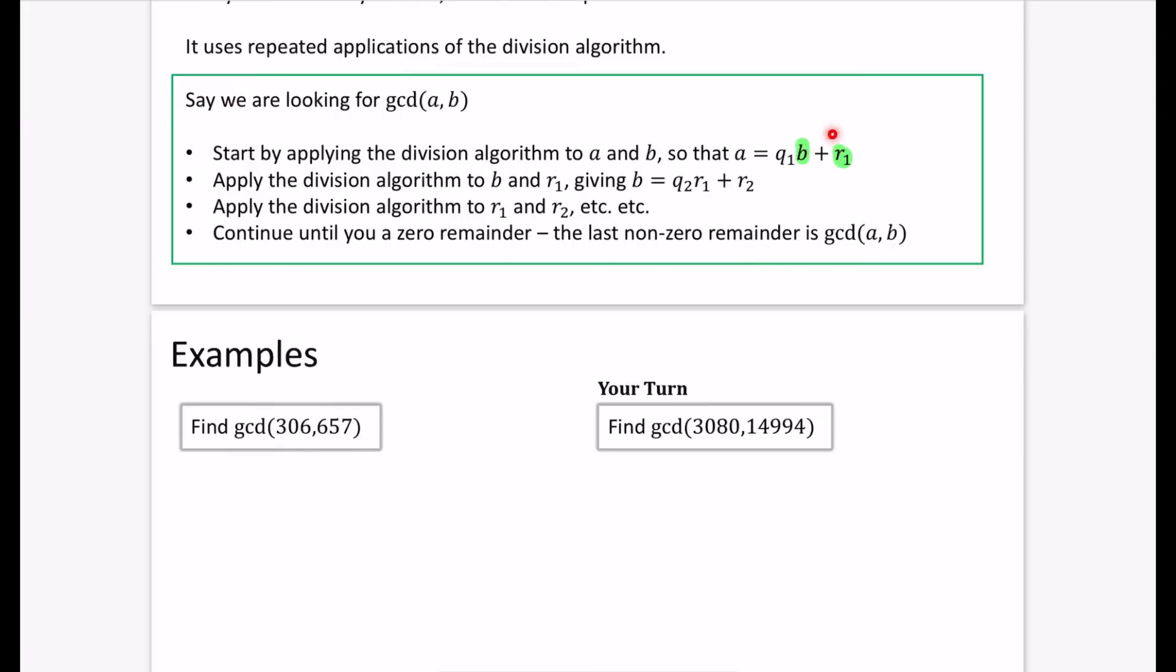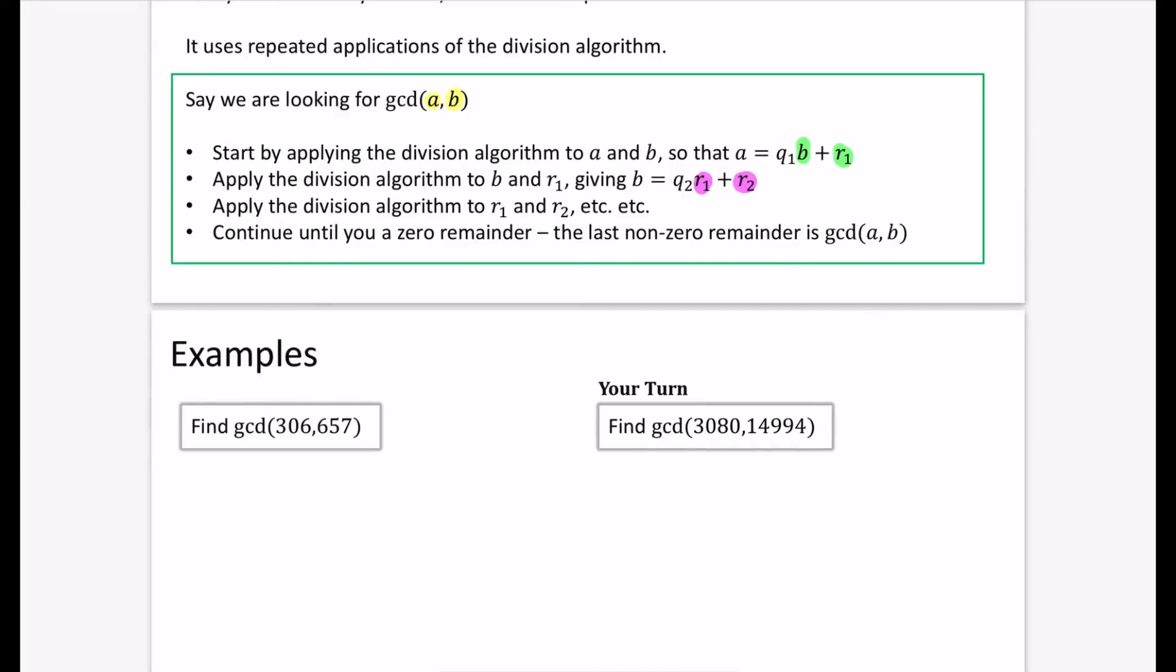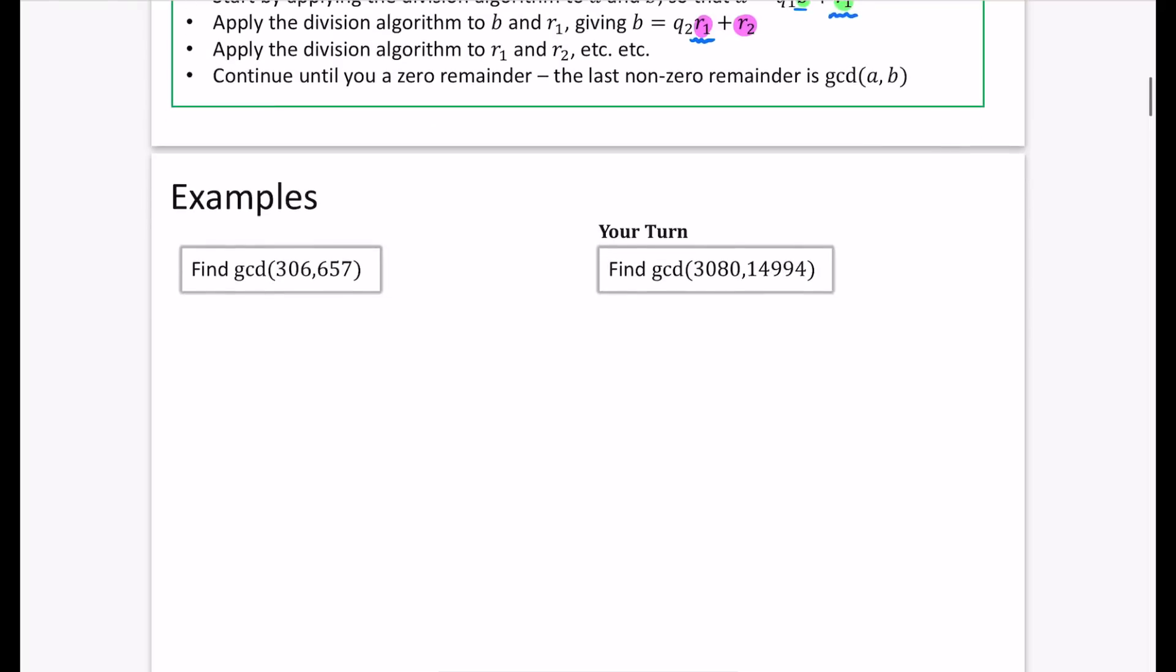So it says here, start by applying the division algorithm to A and B so that A equals Q1B plus R1. Then what you do is you apply the division algorithm to B and R1, so you apply the division algorithm to those two things. So it was previously with A and B, and now it's shifted. So it's with B and R1. Then what you do is you get this new equation here and you apply the division algorithm to R1 and R2. So those last two terms that we've got here to R1 and R2. And you just keep doing this and doing this and you continue until you have a zero remainder. And the last non-zero remainder is the greatest common divisor of A and B.